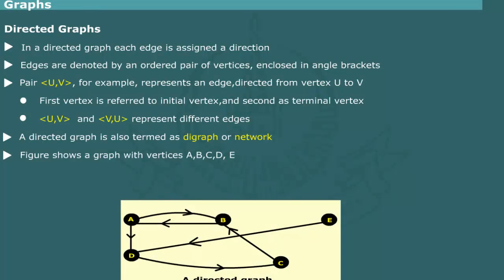Figure shows an example of a directed graph. It consists of vertices a, b, c, d, and e, and edges <a,b>, <b,a>, <a,d>, <e,d>, <c,b>, <d,c>, and <e,d>.